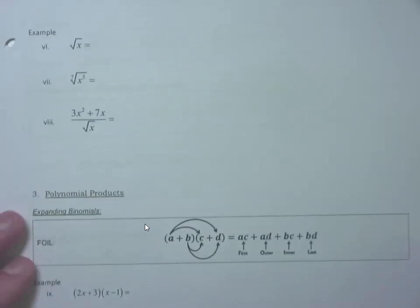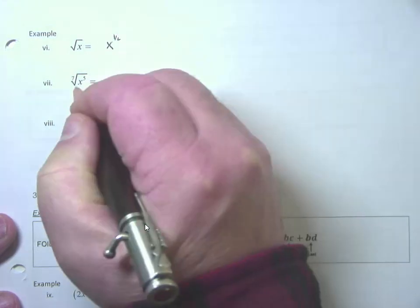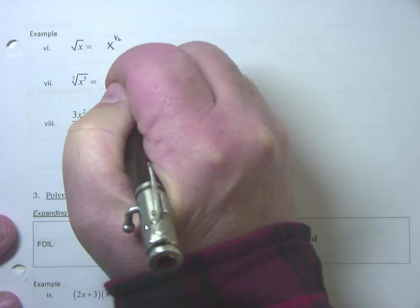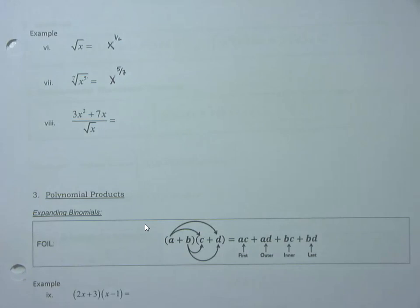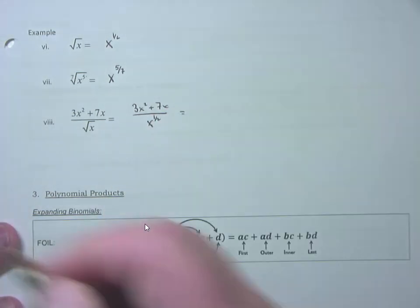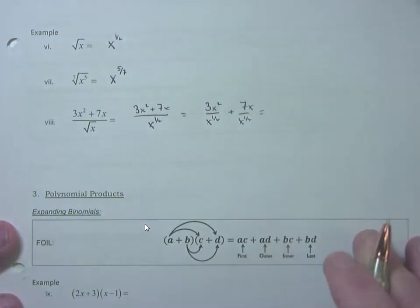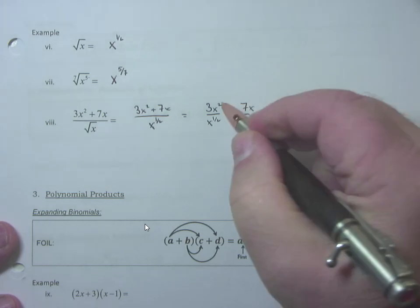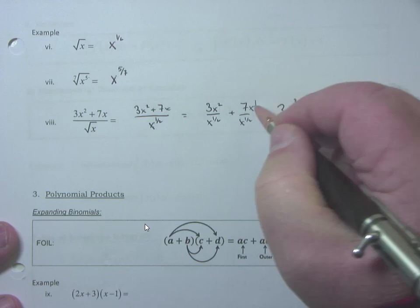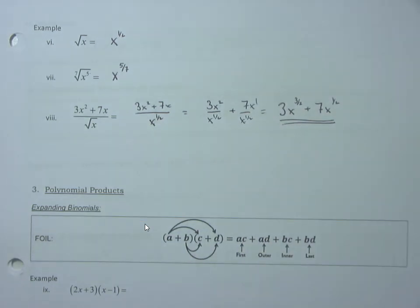We like powers because we'll be using the power rule for integration. I don't do square roots: the square root of x is x to the one-half power. The seventh root of x to the fifth is x to the 5/7 power. Cleaning up a fraction like (3x² + 7x) divided by the square root of x: split into 3x² over x^(1/2) plus 7x over x^(1/2), then subtract exponents. You get 3x to the three-halves plus 7x to the one-half — much better for calculus.